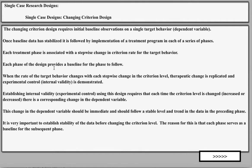Each phase of the design provides a baseline for the phase to follow. If the criterion is set for 25 in phase one, the data must level off at 25 in terms of trend and level. Once stable, the researcher can move to the next phase. So each phase serves as a baseline for the one that follows. When the rate of the target behavior changes with each stepwise change in the criterion level, the therapeutic change is replicated.